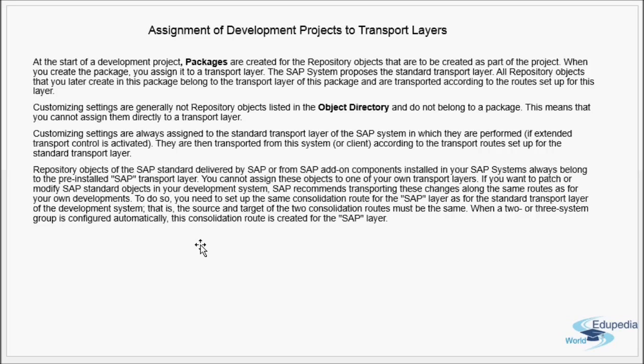An important point is that the consolidation route belongs to a transport layer. Now we are going to learn about transport layers. At the start of a development project, packages are created for repository objects that are to be created as part of the project. Whenever you create an object, you first have to create a package and assign that object to it. When you create the package, you assign it to a transport layer.